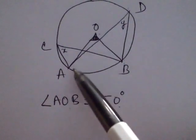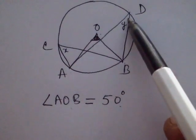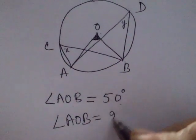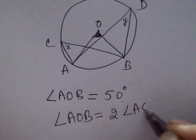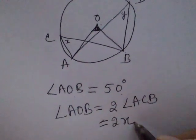The angle at the center is twice the angle subtended at any other point on the remaining part of the circle. This means angle AOB is twice angle ACB, that is twice X.